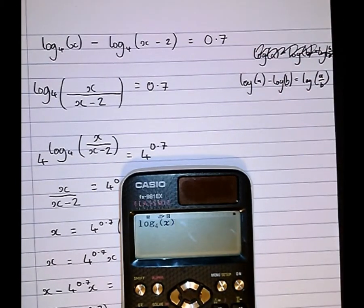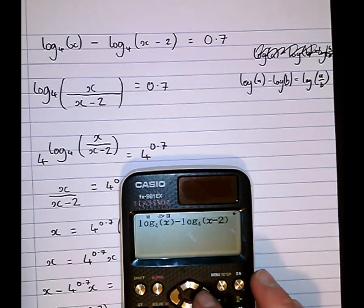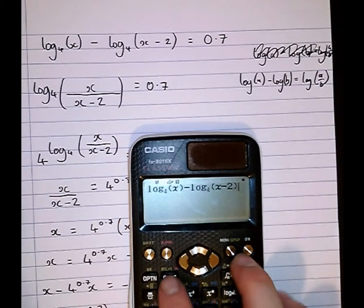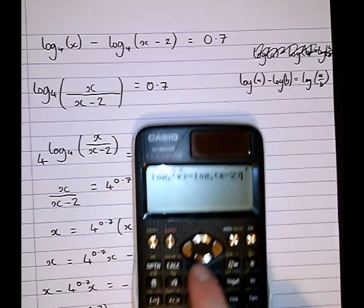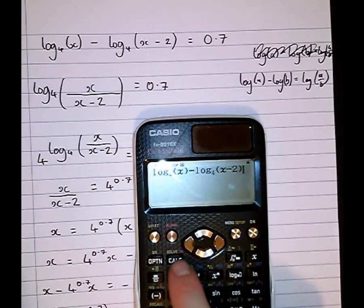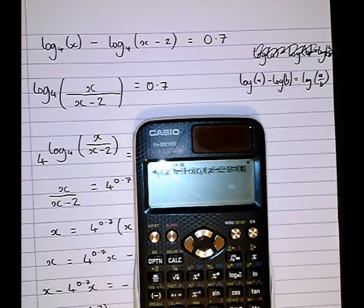Log to the base 4 of x take log to the base 4 of x minus 2, then equals, we're going to use this red equals sign here so just above the calc button, so alpha equals 0.7.